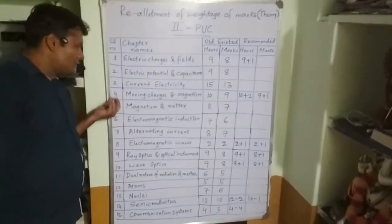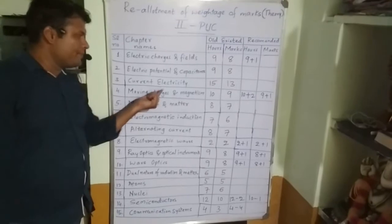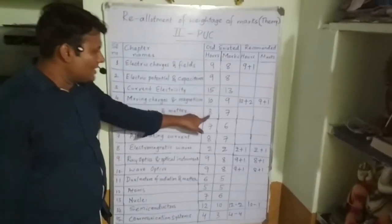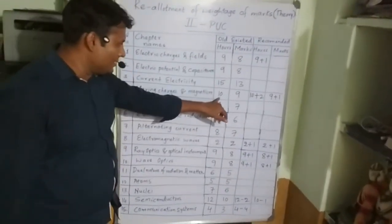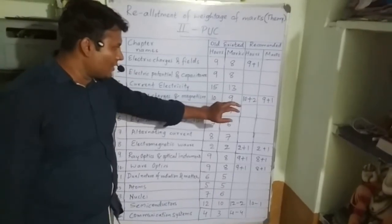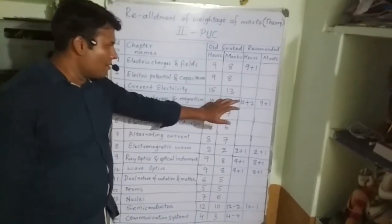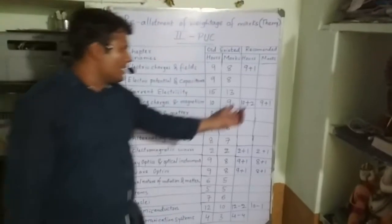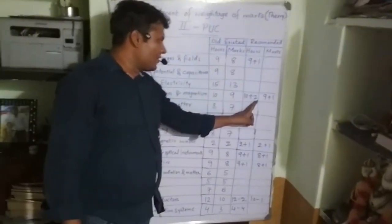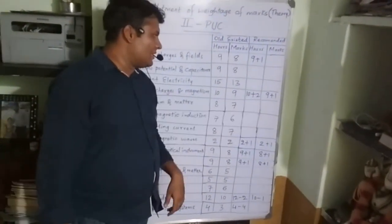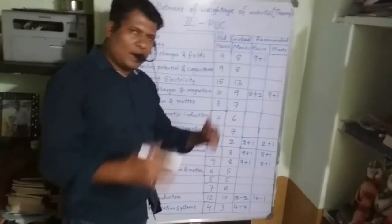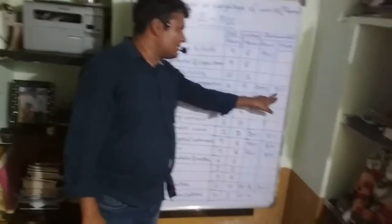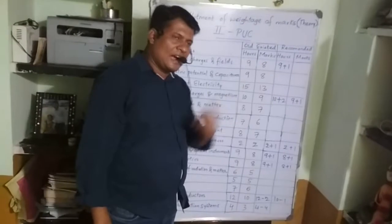The fourth chapter is Moving Charges and Magnetism. In the old syllabus, 10 hours of teaching and nine marks were allotted. In the recommended section, two extra hours have been added, making it 12 hours, and one mark has been added, making it nine plus one — that is, 10 marks total.